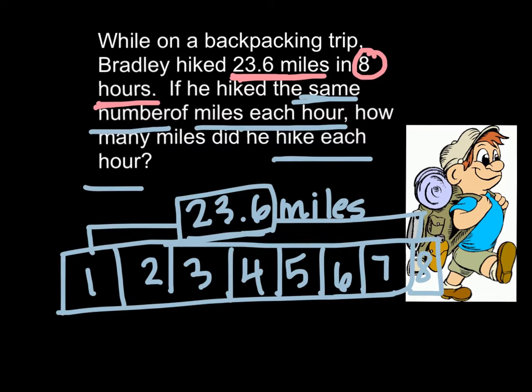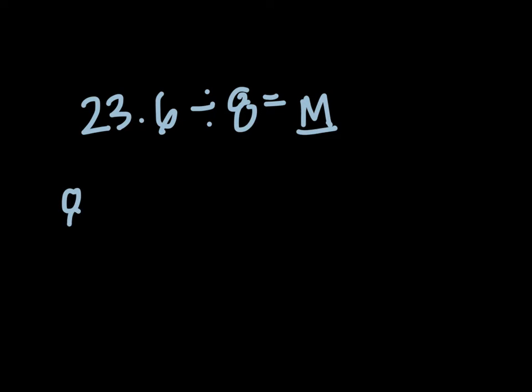So if I was going to set up a word problem for this, I could do that in one of two ways. I could say 23 and six tenths divided by eight will give me the number of miles he walked every hour. Or I could say eight times the miles per hour would give us a total of 23.6.